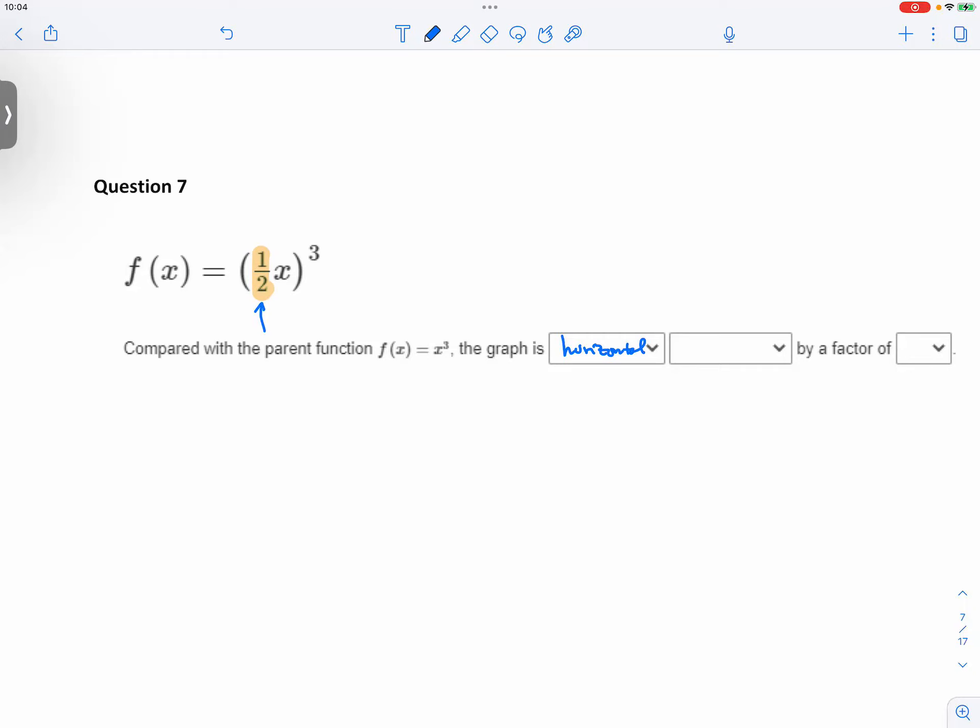It's a horizontal what by a factor of what? Well, this is 1 half. The reciprocal of 1 half is 2.